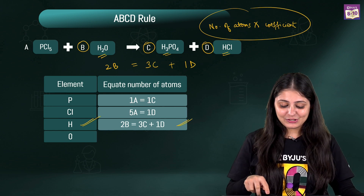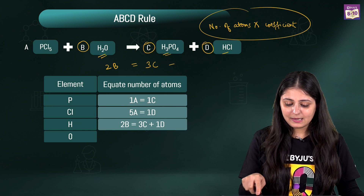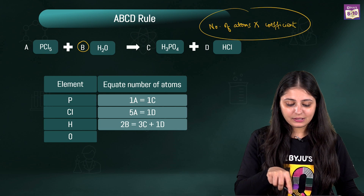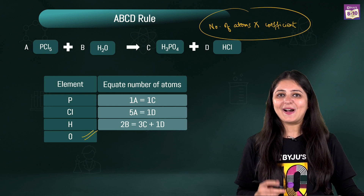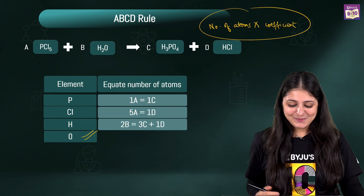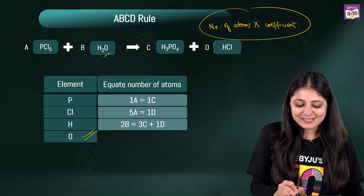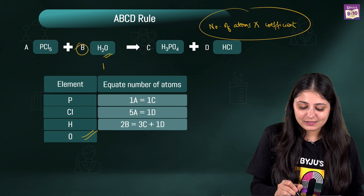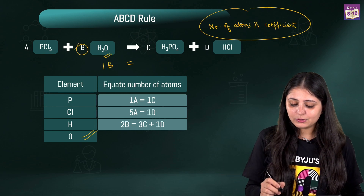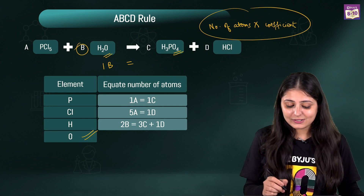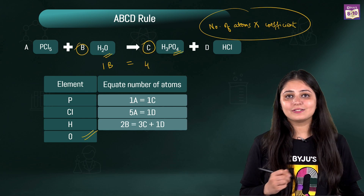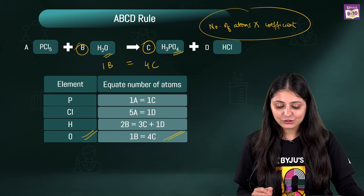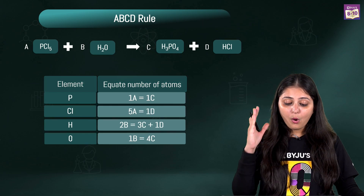Finally, we apply the same rule for oxygen. On the reactant side there is 1 oxygen atom with coefficient B. On the product side there are 4 oxygen atoms with coefficient C. So the equation is: 1B = 4C. That's our fourth equation.